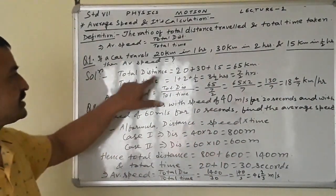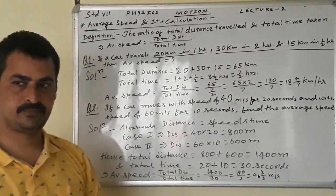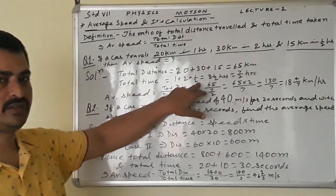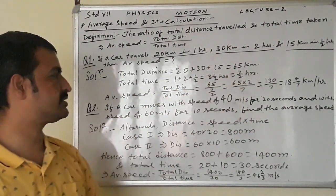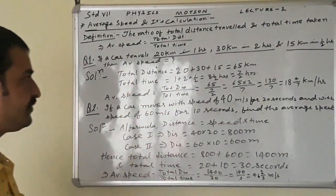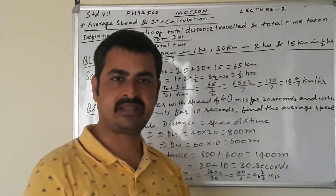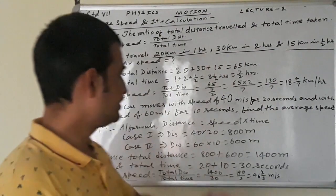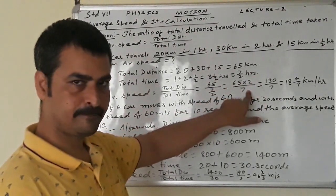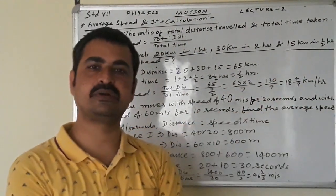Total distance is 20 plus 30 plus 15, that is 65 km. Total time is 1 hour, 2 hours, and half hour, that is 3 and a half hours, or 7 by 2 hours. To find average speed, total distance 65 km is divided by total time 7 by 2 hours. So: 65 divided by 7/2 equals 65 into 2 divided by 7, which is 130 by 7, that is 18 and 4/7 km per hour.